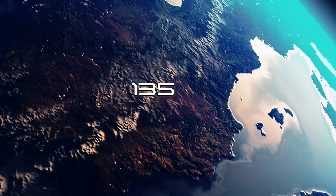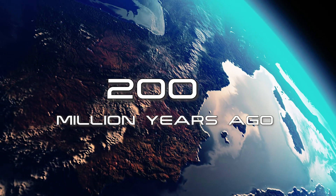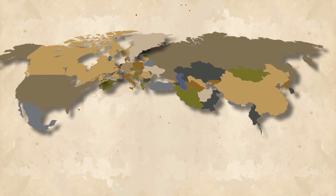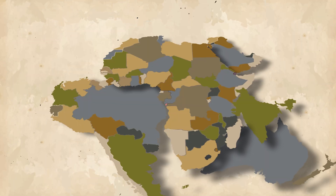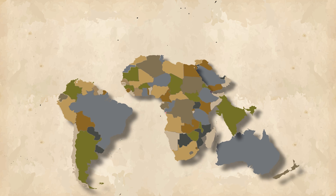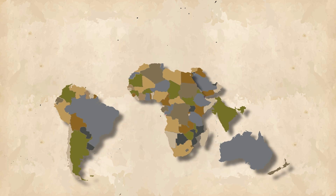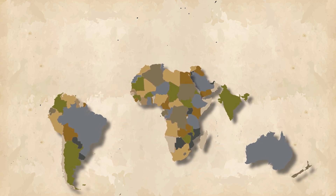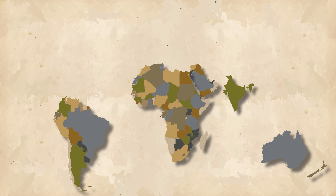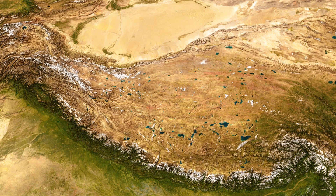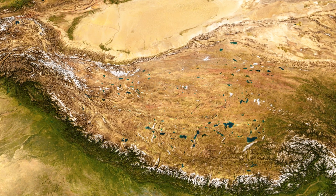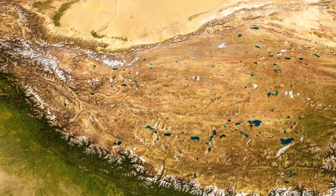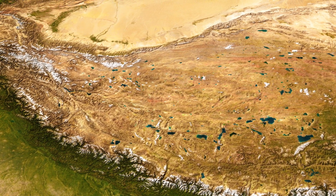Between 135 and 200 million years ago, Laurasia split into Eurasia and North America. Gondwana divided into Africa, South America, Antarctica, Australia, New Zealand, as well as Arabia, Madagascar, and Hindustan, whose collision with the Asian continental plate caused intense mountain formation with the rise of the Himalayan mountains.